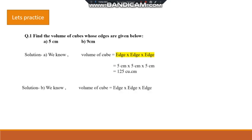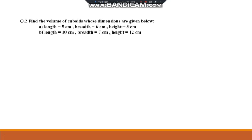For the second question, edge is given as 9 centimeter. Again using the formula, volume of cube = edge × edge × edge = 9 × 9 × 9 = 729 cubic centimeter.